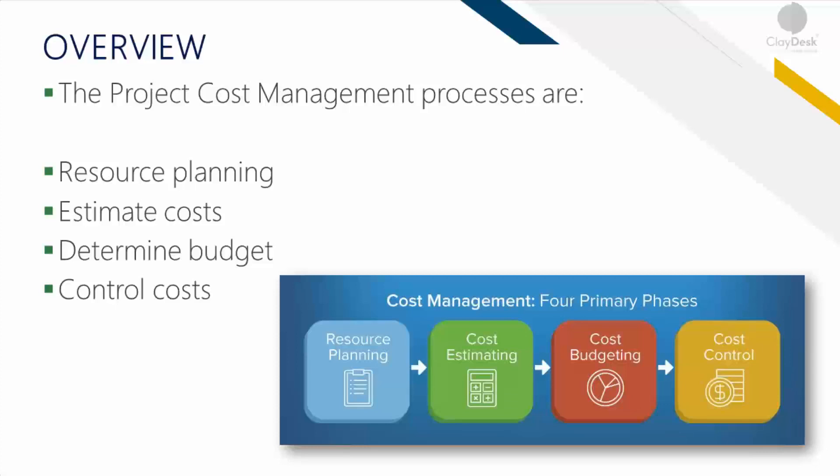Second is estimating costs, which is the process of developing an approximation of the monetary resources needed to complete project work. Next is determining the budget itself, which is the process of aggregating the estimated costs of individual activities or work packages to establish an authorized cost baseline. And then finally, controlling those costs, which is the process of monitoring the status.